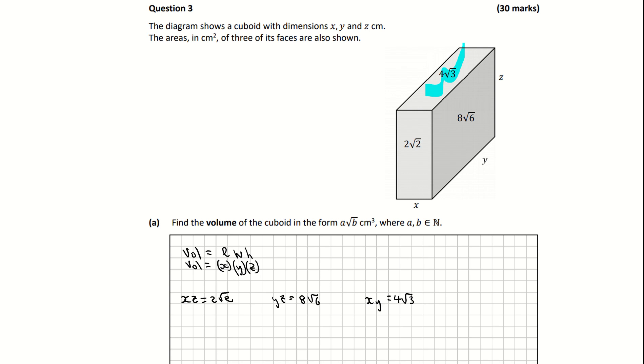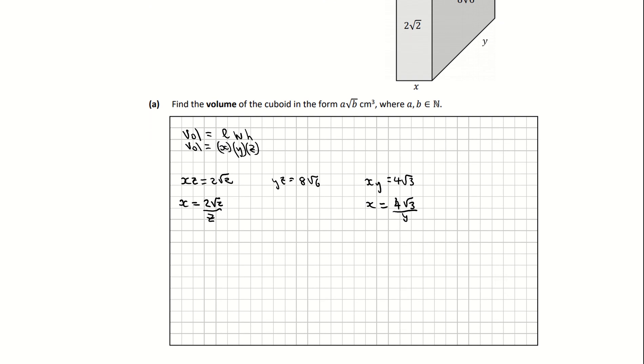I'm just writing down what I know. Now two of these have an x term in them: xz and xy. I'm going to manipulate those and divide across by z on the first one, so I have x equals 2 root 2 over z. And on the third one I can have x equals 4 root 3 divided by y. So that means that both of those are equal to each other.